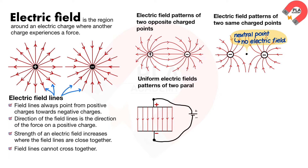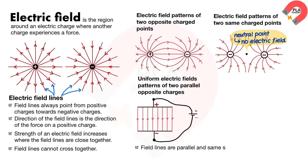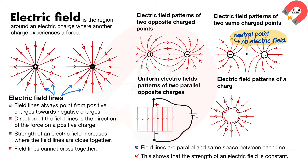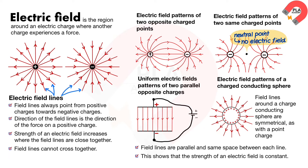Uniform electric field patterns of two parallel opposite charges. The field lines are parallel with equal spacing between each line. This shows that the strength of the electric field is constant. Electric field patterns of a charged conducting sphere. The field lines around a charged conducting sphere are symmetrical, as with a point charge, because the charges on the surface of the sphere are evenly distributed.